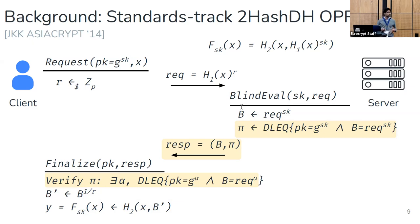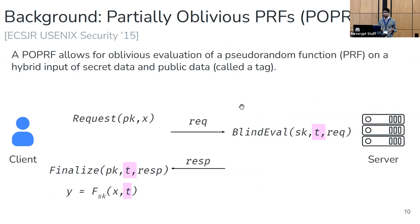In this work we're concerned with building a partially oblivious PRF, a POPRF. A POPRF is just like an OPRF except it additionally allows for a public input component that I'll call a tag. The PRF is evaluated on this combination of the public input tag as well as the client's secret input. The security properties are the same: the client shouldn't learn anything about the PRF key beyond the evaluation, and the server shouldn't learn anything about the client's secret input component. We can again add verifiability on top of this.